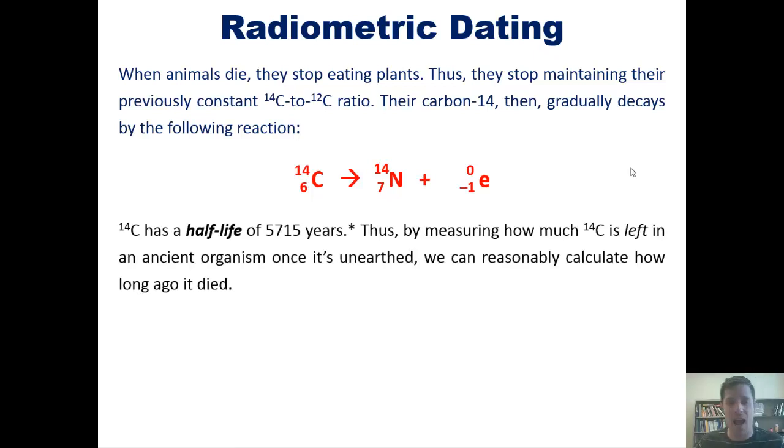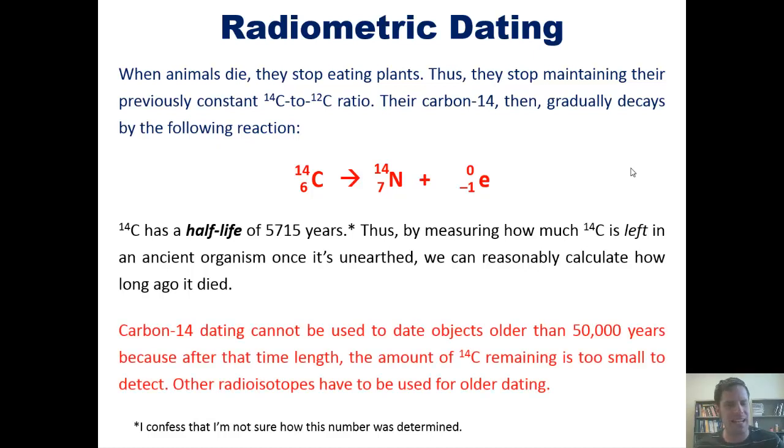Now, carbon-14 has a half-life of 5,715 years. Parenthetically, I should mention that I confess that I have no idea how this number was obtained. I don't know if anyone actually sat down with a stopwatch and measured it, but, you know, that's the number. Thus, measuring how much carbon-14 is left in an ancient organism once it's unearthed can allow us to reasonably calculate how long ago it died. Carbon-14 dating cannot be used to date objects older than 50,000 years, however, because after that time length, the amount of carbon-14 remaining is too small to detect. Other radioisotopes have to be used for older dating.